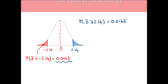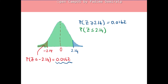Another question: what's the probability that Z is less than or equal to 2.14? You can use the table directly since it gives the area to the left. Alternatively, we can use the fact that the total area is 1 and we already have the area in the right tail. The probability is the area all the way to the left of 2.14, so it equals 1 minus the area in the right tail.